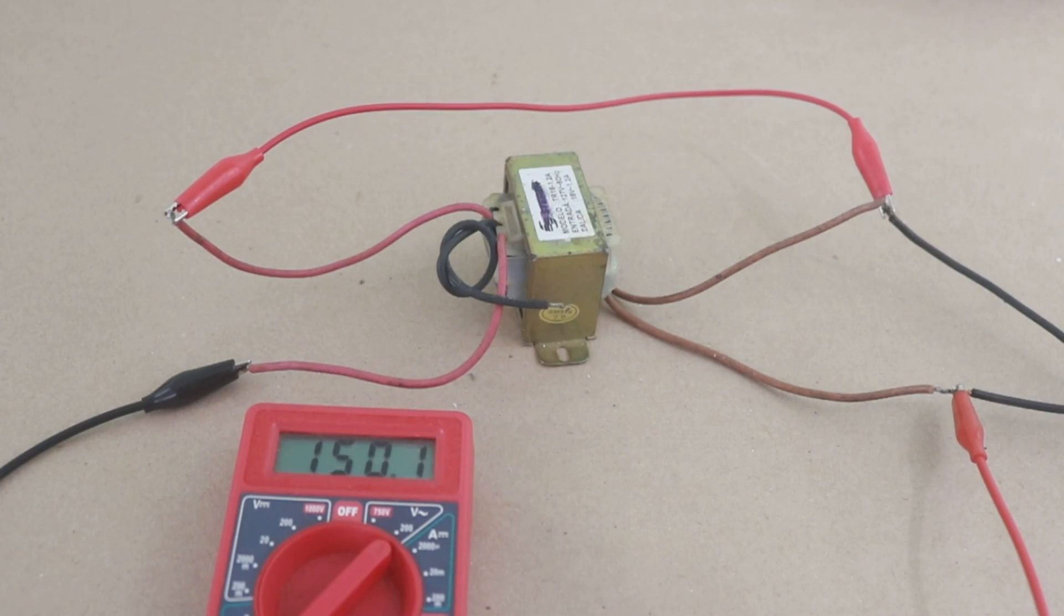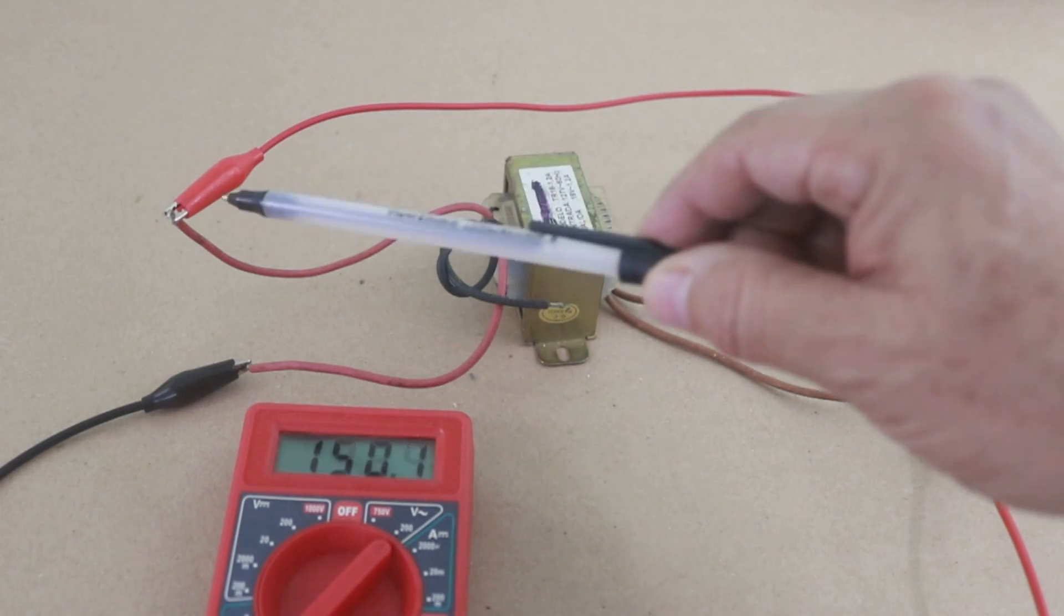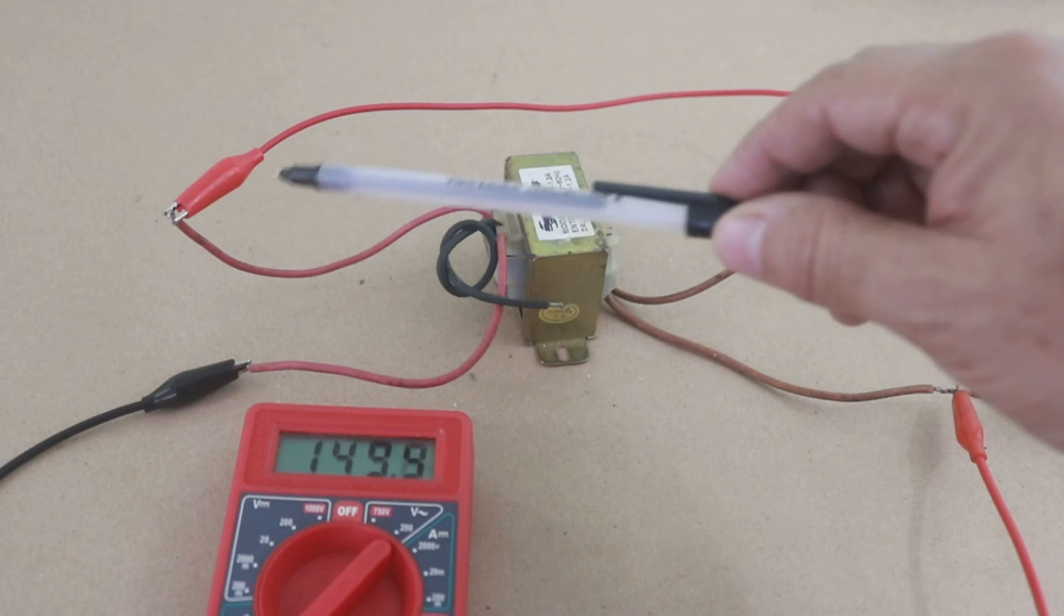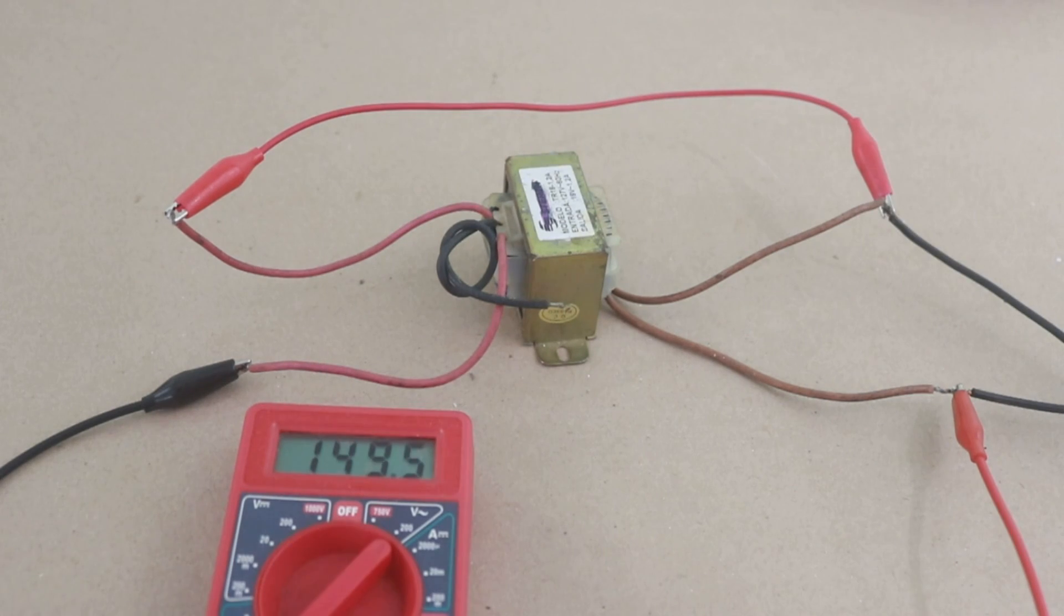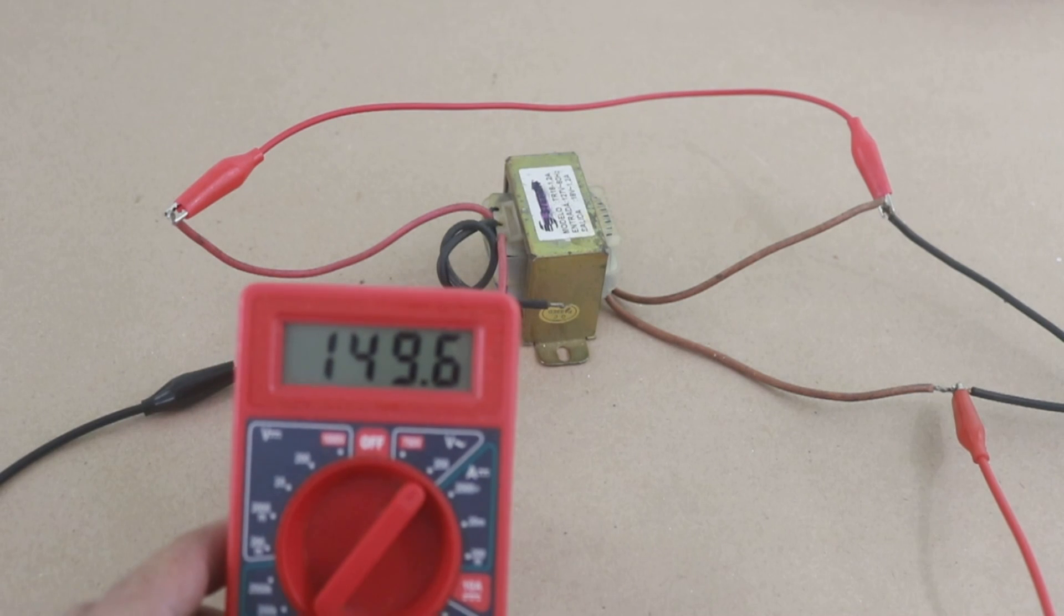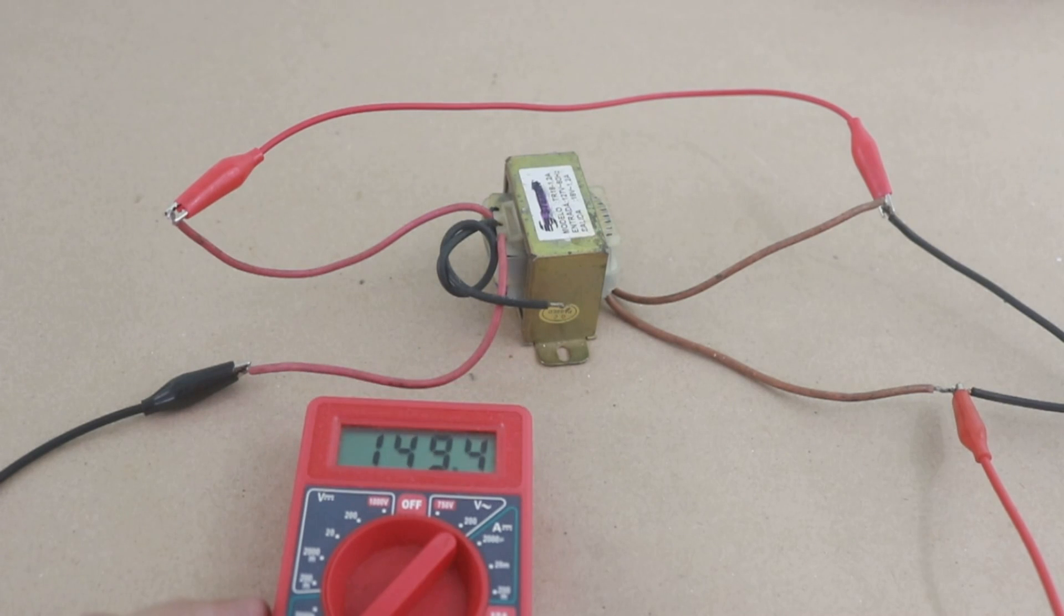Okay here we made the connection between the primary and secondary from this side of the primary to this end of the secondary coil and we can see that the voltage is 150 volts that is the sum of the two previously measured voltages.